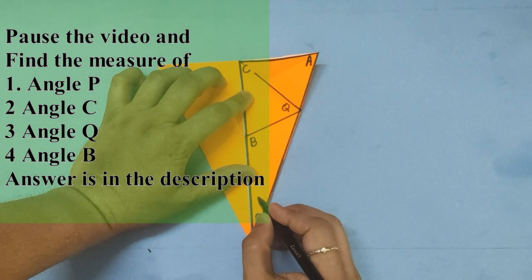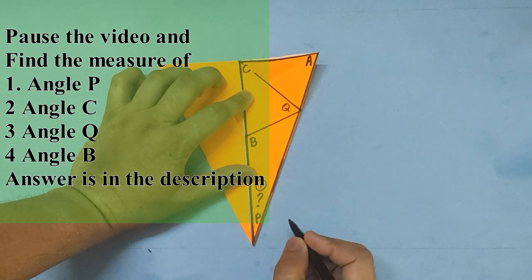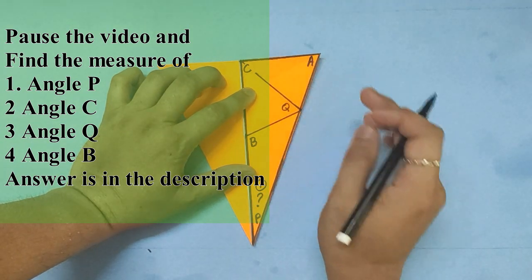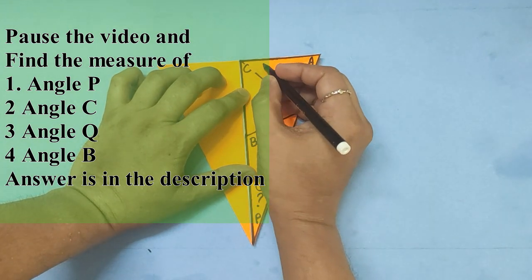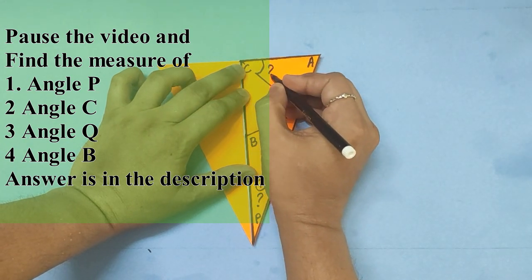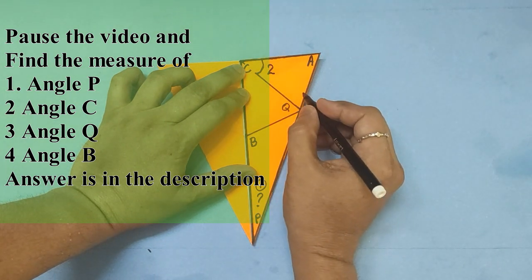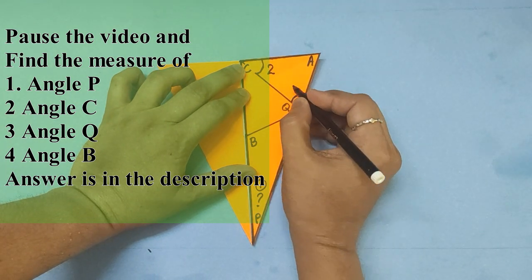Now you will find the angles B C Q and B without using a protractor. You may pause the video to check your answers. You may see the description.